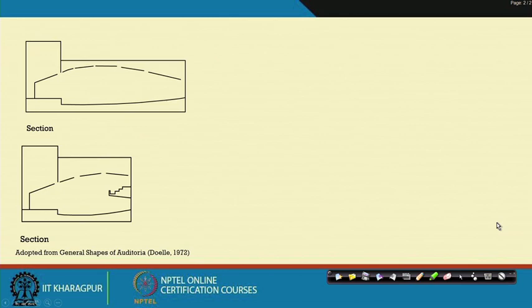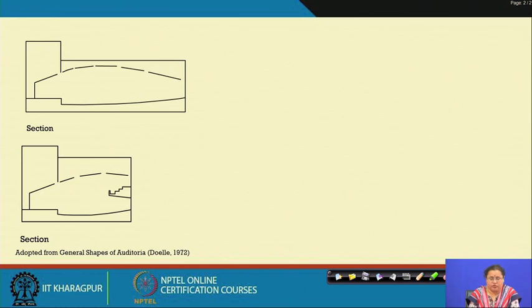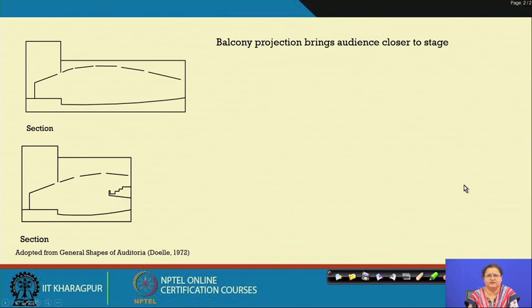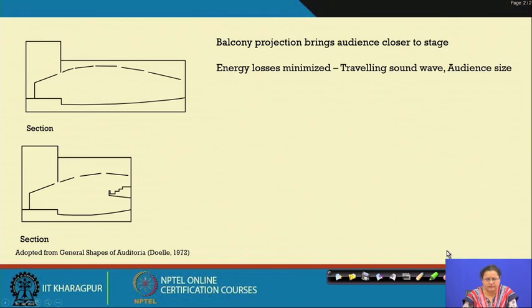This profile has been adapted from Dole in 1972, who is an acoustician. He stated that balcony projections bring the audience closer to the stage. This is very important because once you bring people closer to the stage, the distance travelled by sound is reduced. The reflected path, which is more important in big spaces, has its energy loss minimized and the reflected sound gets emphasized.